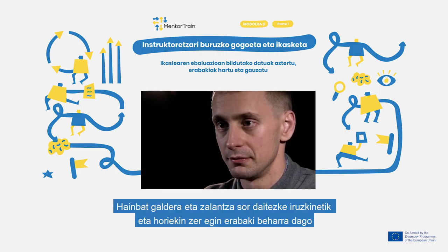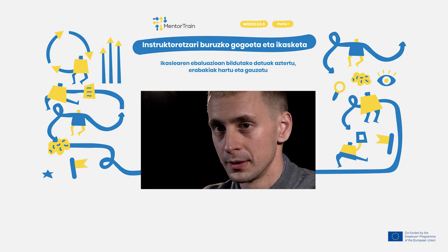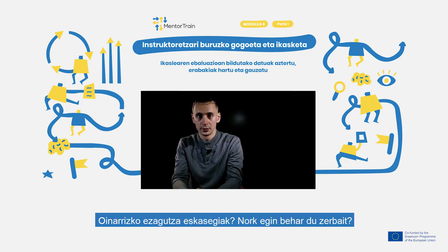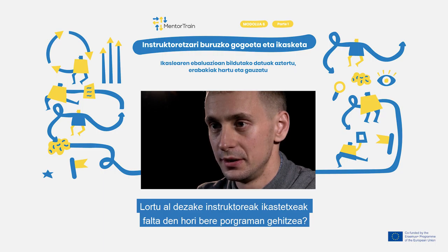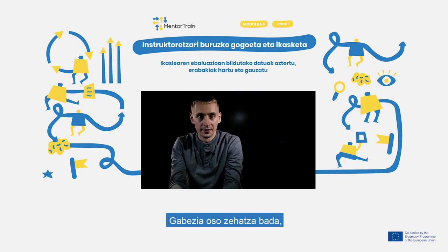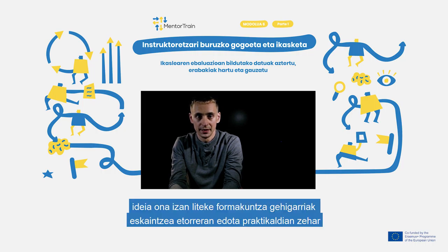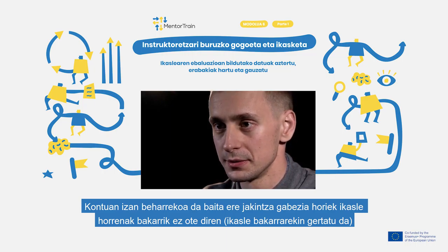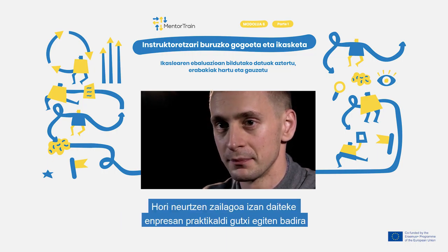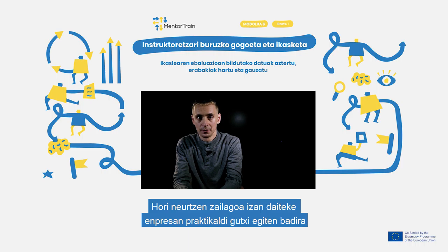Several questions can arise from the report and you need to decide what to do. Shortcomings of previous knowledge — who needs to act? Is it something specific to your company and can you solve it yourself? Can you convince educational institutions to add it to the curricula? If the lack of competencies is very specific, it may be a good idea to provide training alongside the onboarding or during the apprenticeship. You also need to consider if the problems and shortcomings experienced are apprentice-specific, occurring only once, or systematic and reoccurring. This can be difficult if a company has a small number of apprentices.